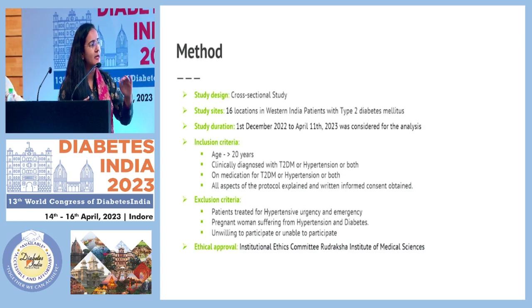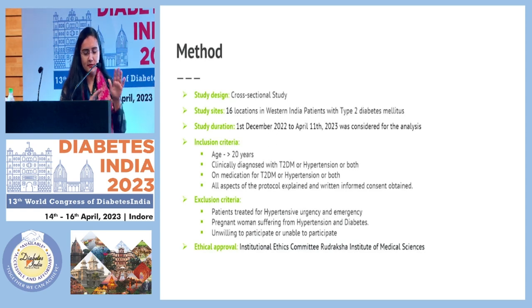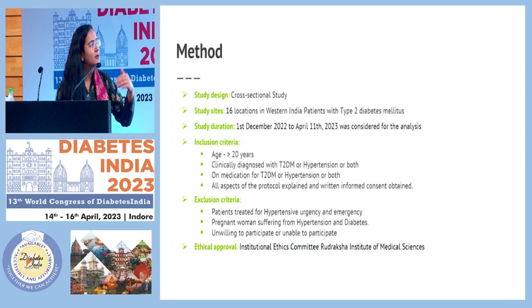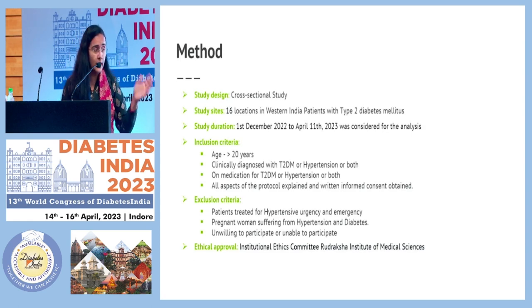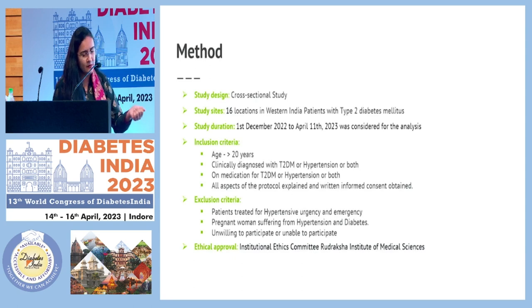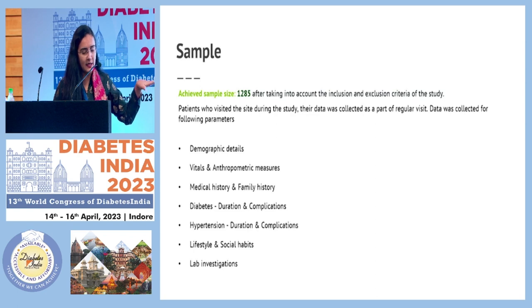We wanted to see how investigators across Gujarat and particular pockets are able to prescribe on the background of hypertension and type 2 diabetes. Our inclusion criteria was all adults with type 2 diabetes. We asked investigators that on a particular day, the first 10 patients would be included onto the EHR provided by Mediva. The exclusion criteria included any pregnancy, type 1 diabetes, any acute illness, or patients unwilling to participate. The institutional ethics committee approved this study, and the achieved sample size is 1285.